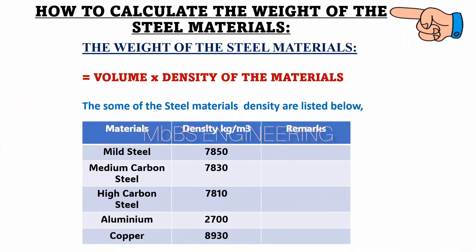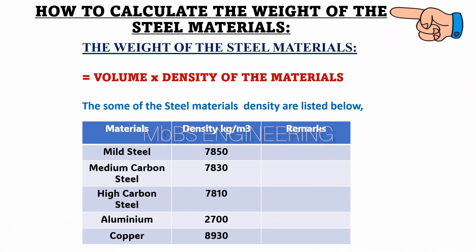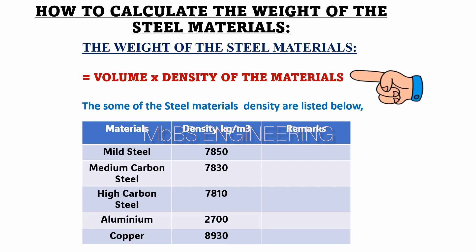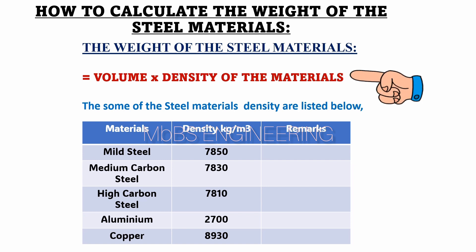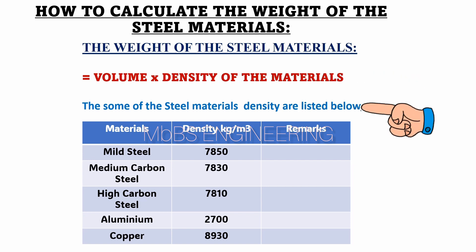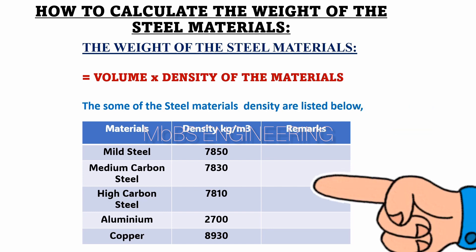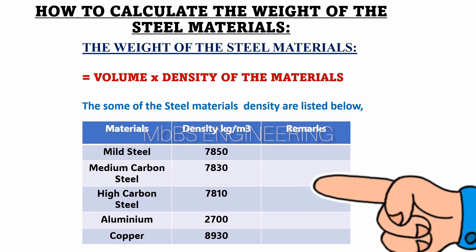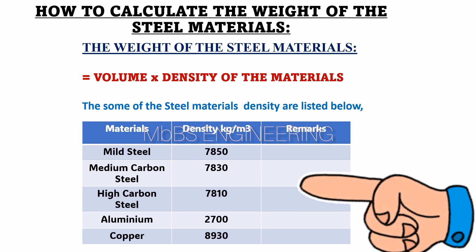We learn about how to calculate the volume and weight of mild steel materials. The weight of mild steel materials can be calculated by multiplying the volume of the material by its density. Here are the densities of some commonly used materials: mild steel, medium carbon steel, high carbon steel, aluminum, and copper.